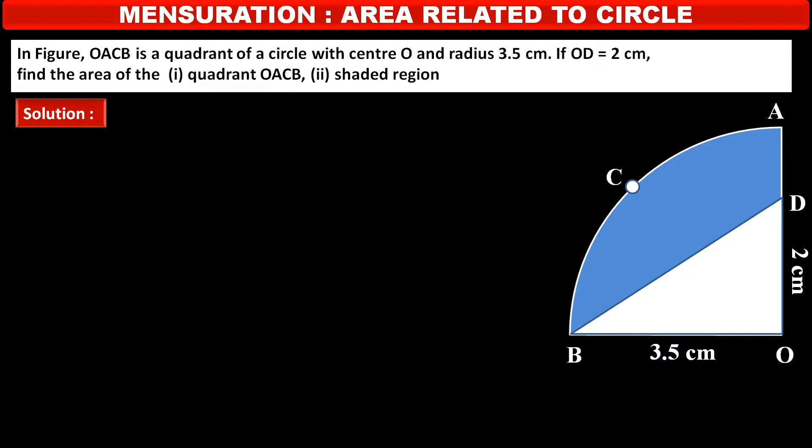We can find the area of shaded region by subtracting area of triangle BOD from area of quadrant OACB. Radius of the quadrant OB or OA is equal to 3.5 cm. Since it is a quadrant, the value of theta is 90 degrees. Height of the triangle BOD, OD, is given as 2 cm.